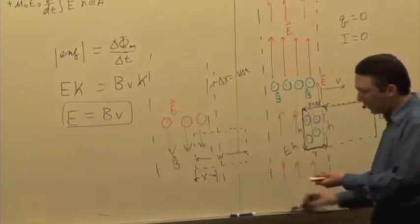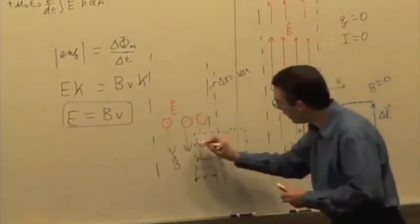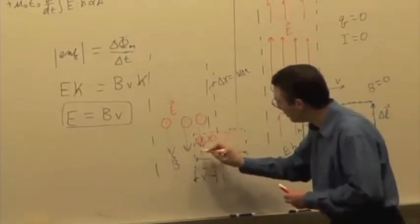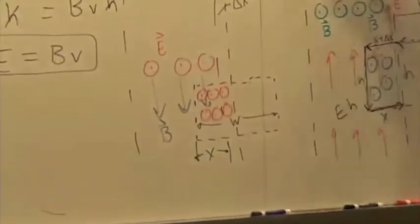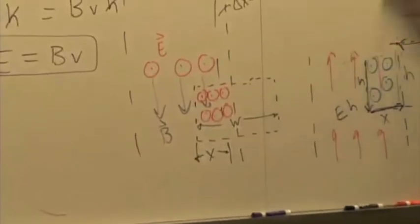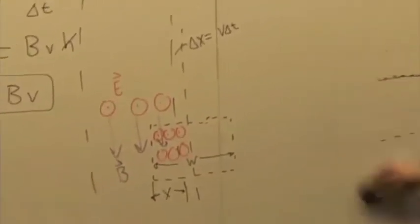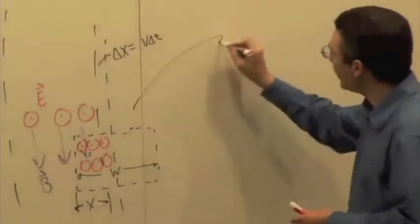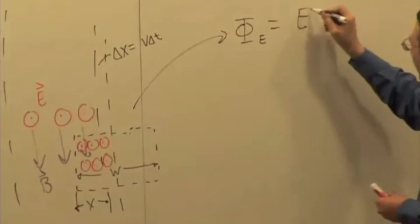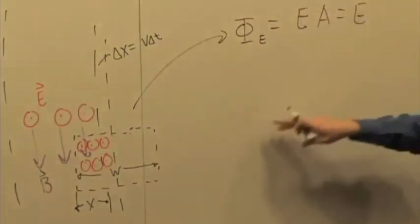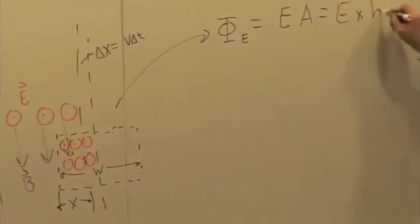So I have an electric flux through this region. My phi electric now is going to be E times the area, or E times X times H.